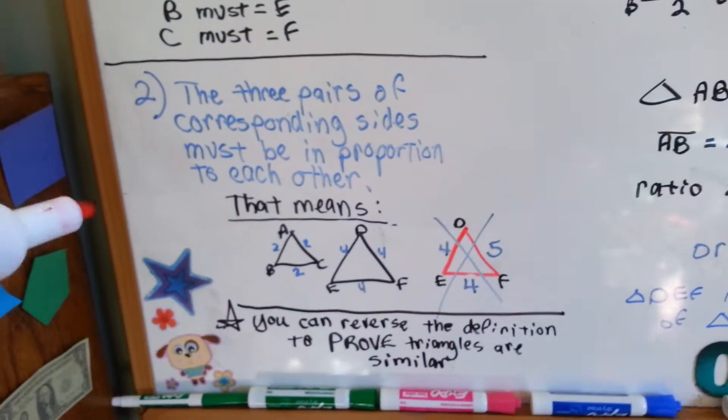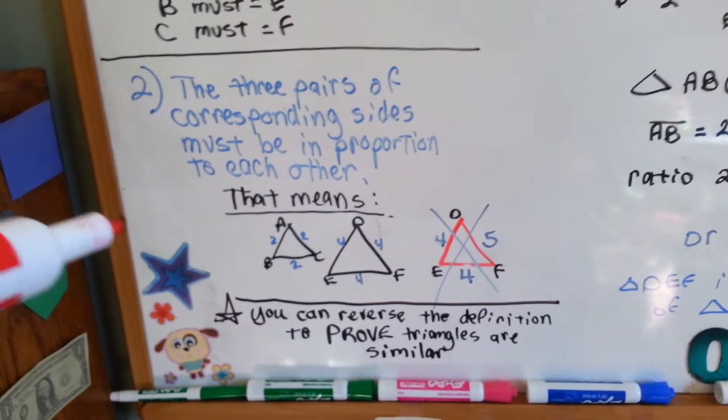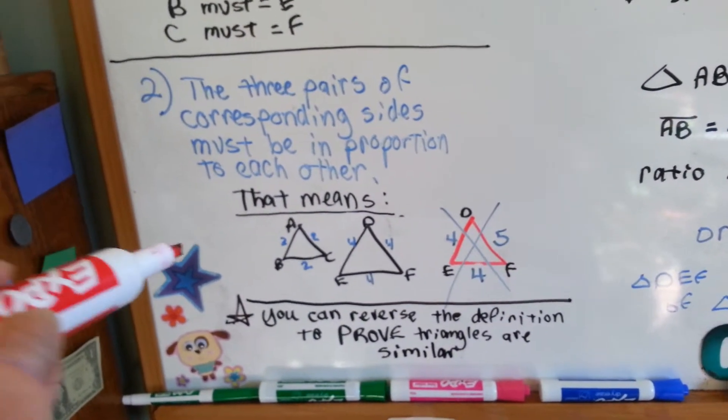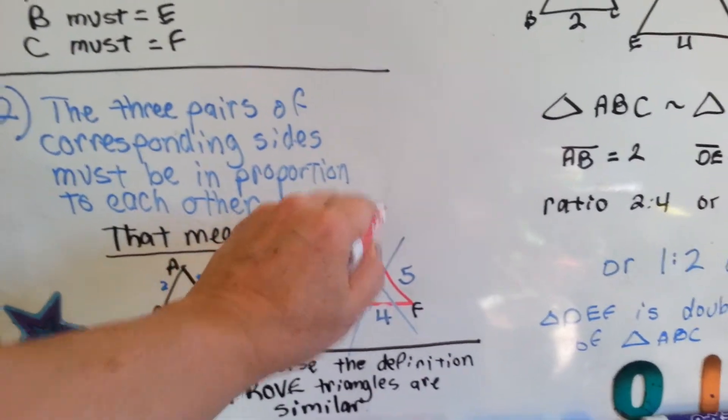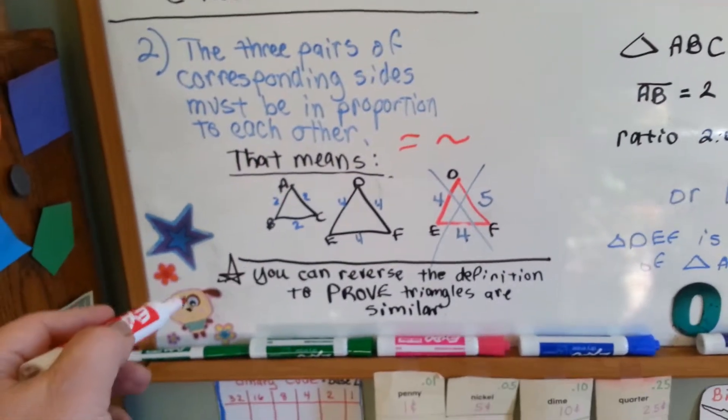So, here's the second rule. The three pairs of corresponding sides must be in proportion to each other. So, they either need to be equal, or they need to be similar.